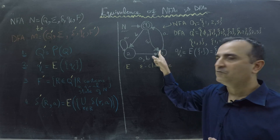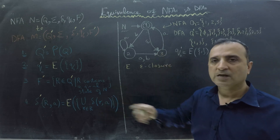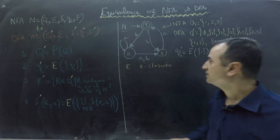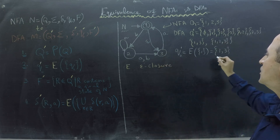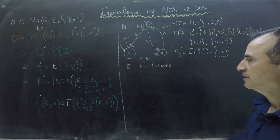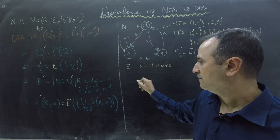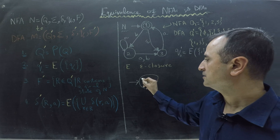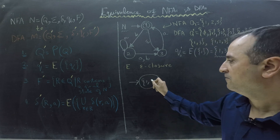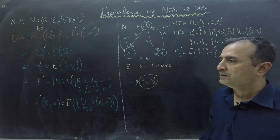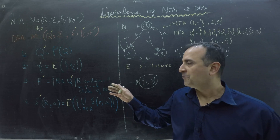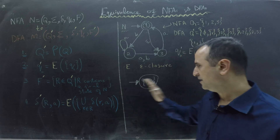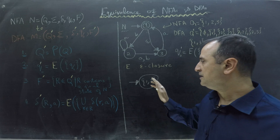Now we check if from state 3 we can reach any other state via epsilon transition. In this case, there is no epsilon transition from 3, so that's it. The start state of our DFA is {1, 3}. We will use the third rule — about final states — at the end. First, let me build all states reachable from the start state.